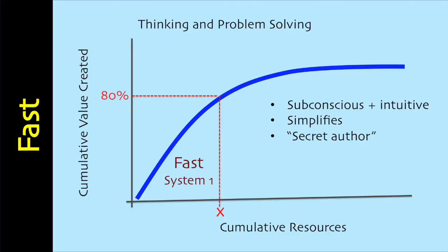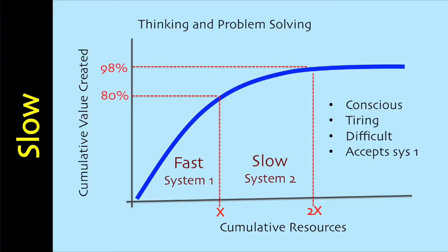Thinking Fast is System 1. It's subconscious and intuitive — emotional, associative, metaphorical, automatic, impressionistic, and it can't be switched off. System 1 thinking reduces our cognitive load by reducing the amount of information we need to process. Its operations involve no sense of intentional control, but it's the secret author of many of the choices and judgments that we make. Slow thinking is System 2. It is conscious and reasoning — more deliberative and logical. Its operations require attention and effort. System 2 takes over, rather unwillingly, when things get difficult. System 2 is slothful and tires easily, so it usually accepts what System 1 tells it.